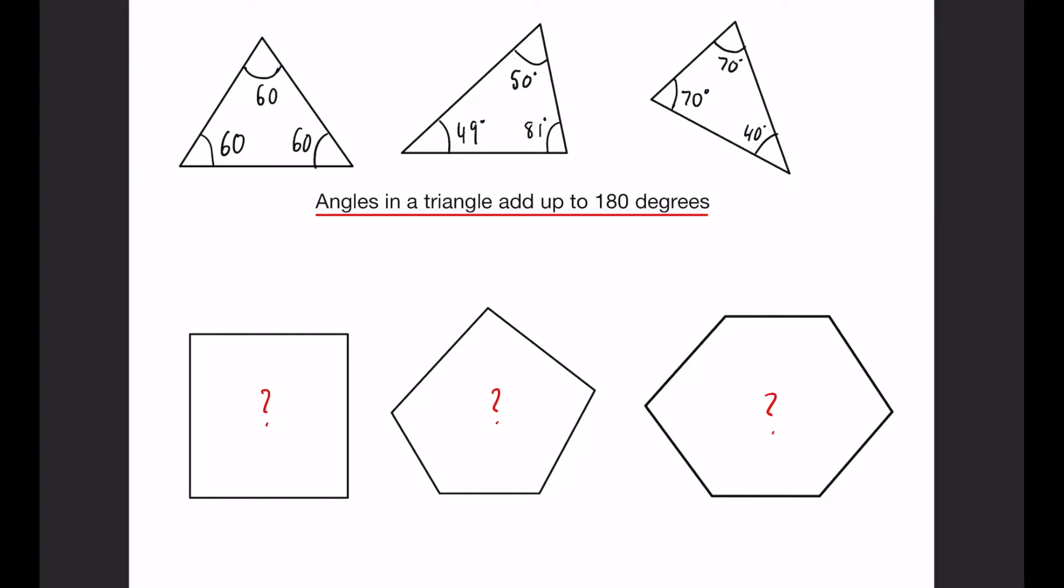How about a four-sided shape, a five-sided shape, and a six-sided shape? Well, a lot of you may already know, for a four-sided shape, that is actually 360 degrees.